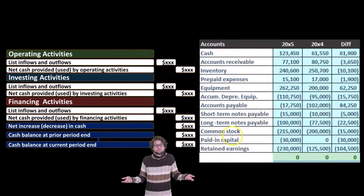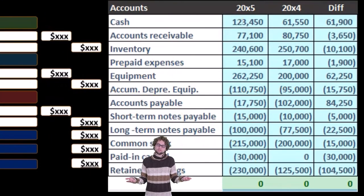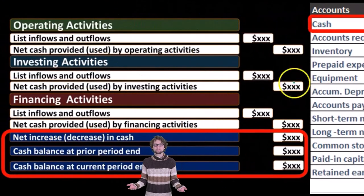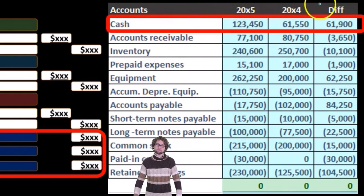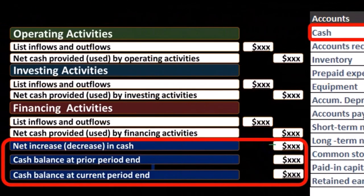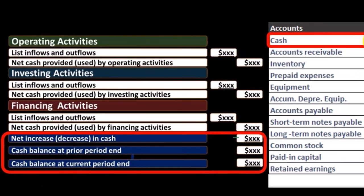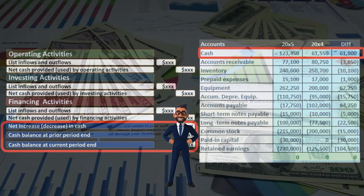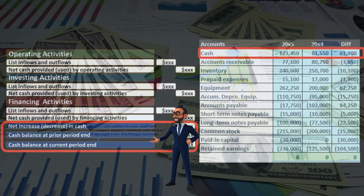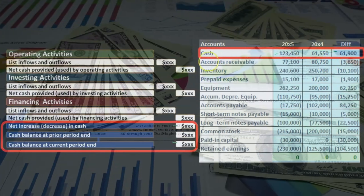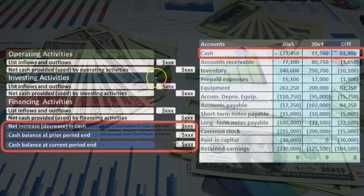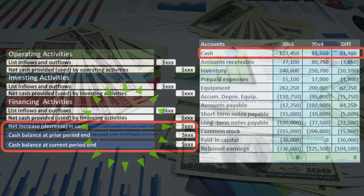Readers can go right to the bottom line number and confirm it matches the balance sheet, seeing how everything ties out. Thinking about this in relation to our worksheet — which has two time periods, a comparative balance sheet with current period and prior period — we can see that all the activity matches up. We're really working with the differences column to help determine what the cash flows from operating activities, investing activities, and financing activities will be.